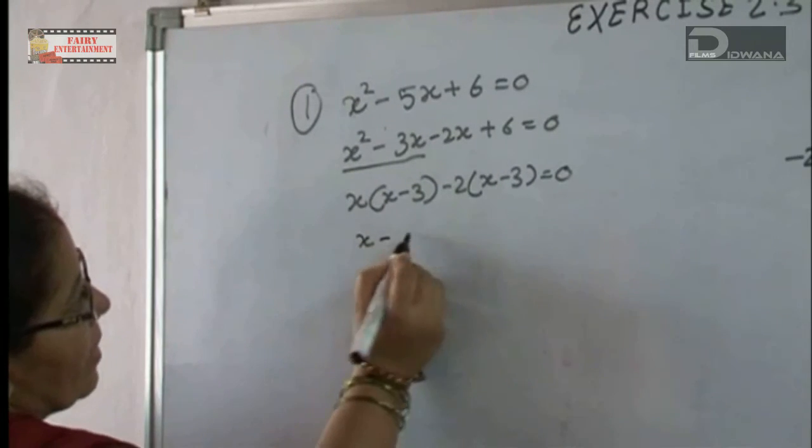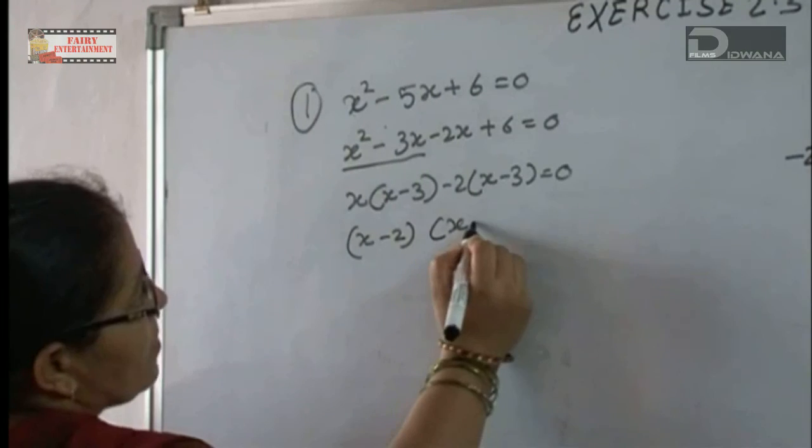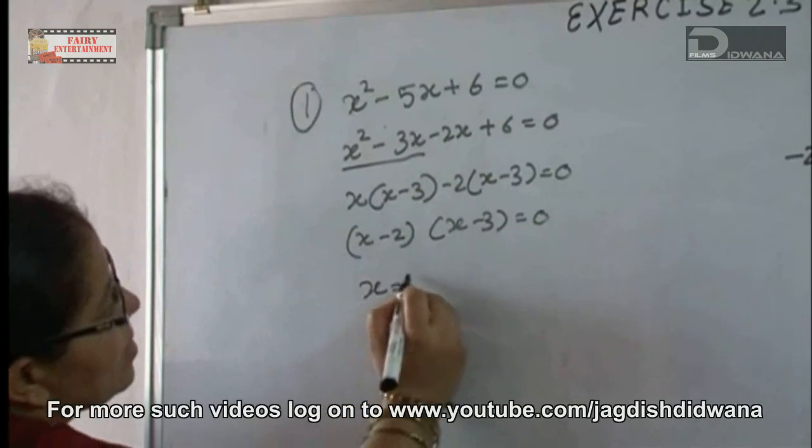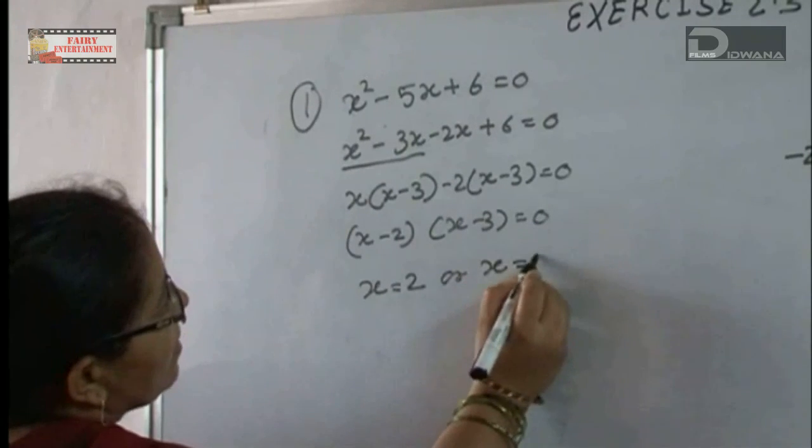In the one bracket, x minus 2 and the another bracket, x minus 3 equal to 0. So, x value is 2 or x value is 3.